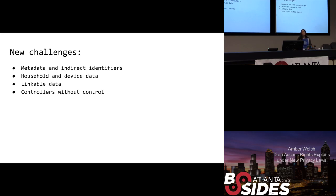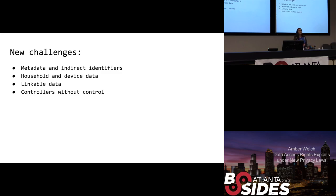There are a few new challenges that have shown up with these access laws. The California Privacy Law, the CCPA, introduced the concept of metadata and indirect identifiers. They've added household data and device data to the concept of what constitutes PII, or personal information. GDPR also added things like IP addresses, which has not traditionally been an American concept of personal data. Both GDPR and CCPA have decided that if data can potentially be linked to a person — even if it's not currently identifiable — that's also personal data. This has a lot of implications for machine learning.